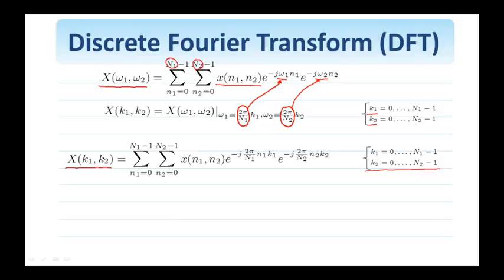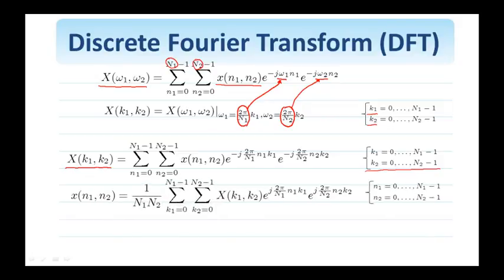And this is clearly a computable transform because it only involves a finite summation, therefore a finite number of operations. The inverse Fourier transform shown here takes me from the frequency, the discrete frequency domain, back to the discrete spatial domain.